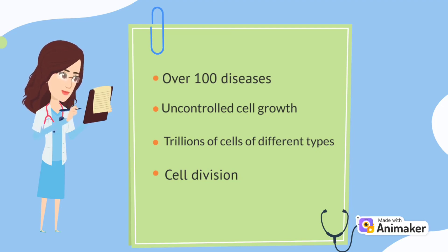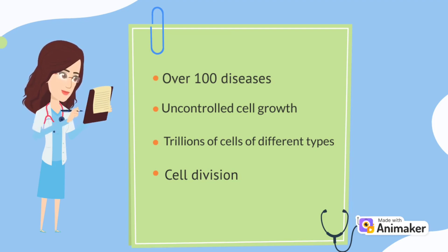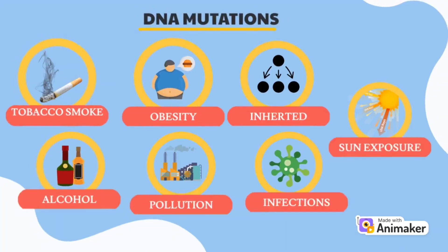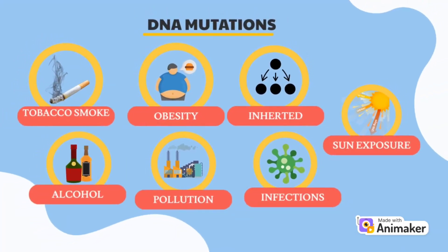This process usually happens in a very controlled way, so that we maintain the right numbers of each type of cell. However, errors can occur in the DNA instructions, called mutations. DNA mutations can occur randomly when the cells don't copy themselves correctly, and these random errors build up over time, which is why cancer risk increases with age.